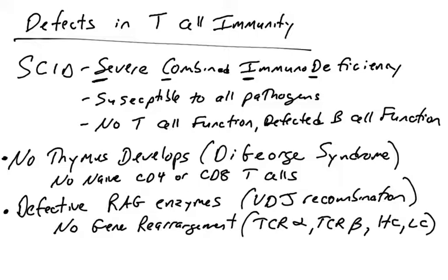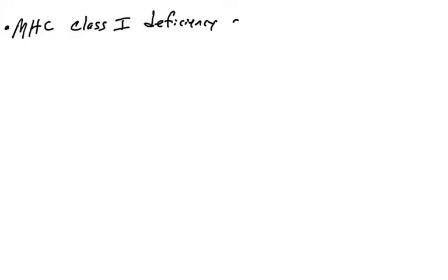Those individuals can sometimes be treated by a bone marrow transplant if they can get a match from an individual whose bone marrow cells are normal and do make the RAG enzymes. That is one way to treat individuals who have inherited defective RAG genes. Let's cover another immunodeficiency — MHC Class 1 deficiency, also known as Bare Lymphocyte Syndrome 1.